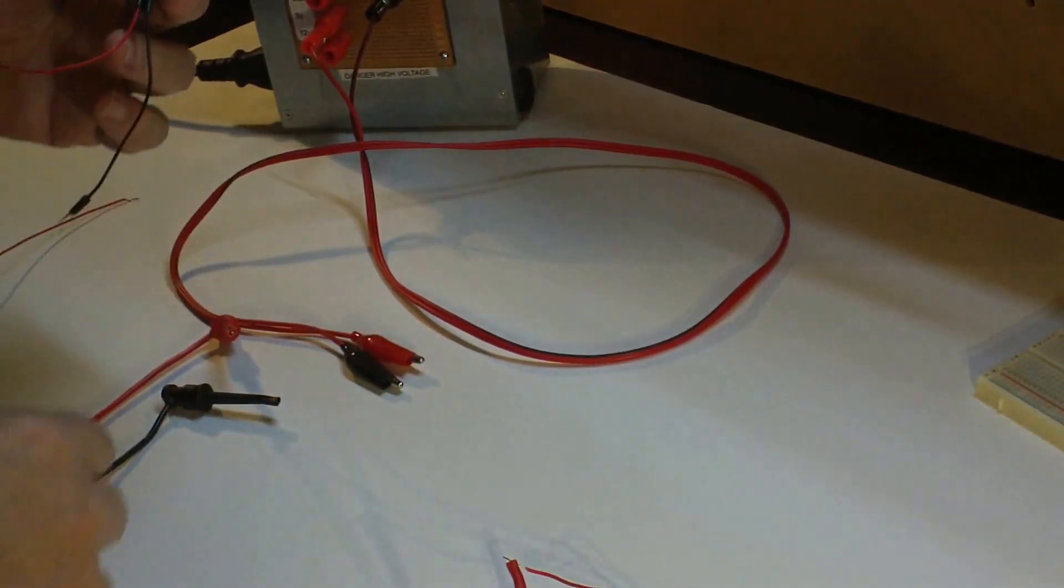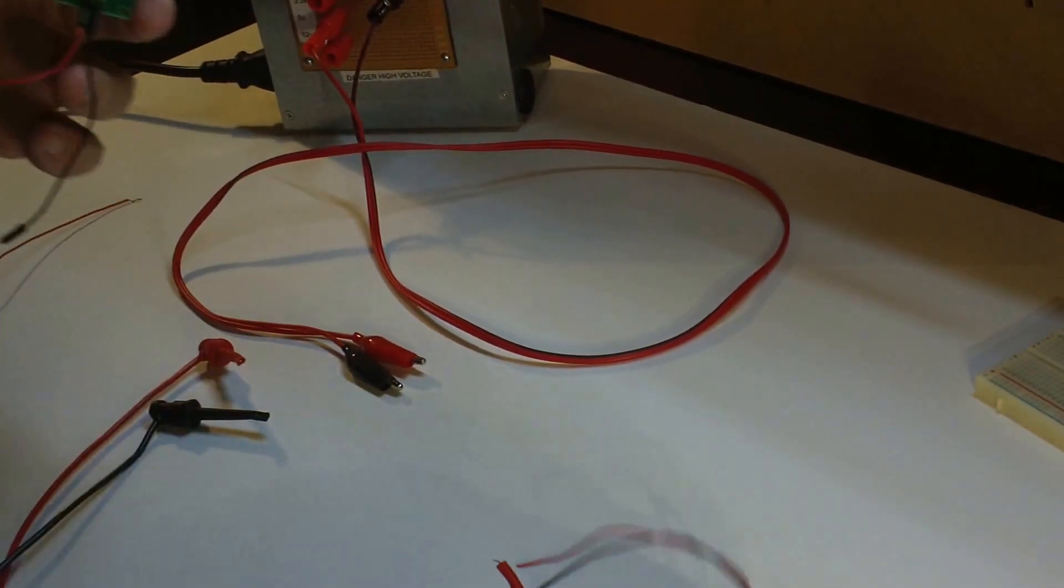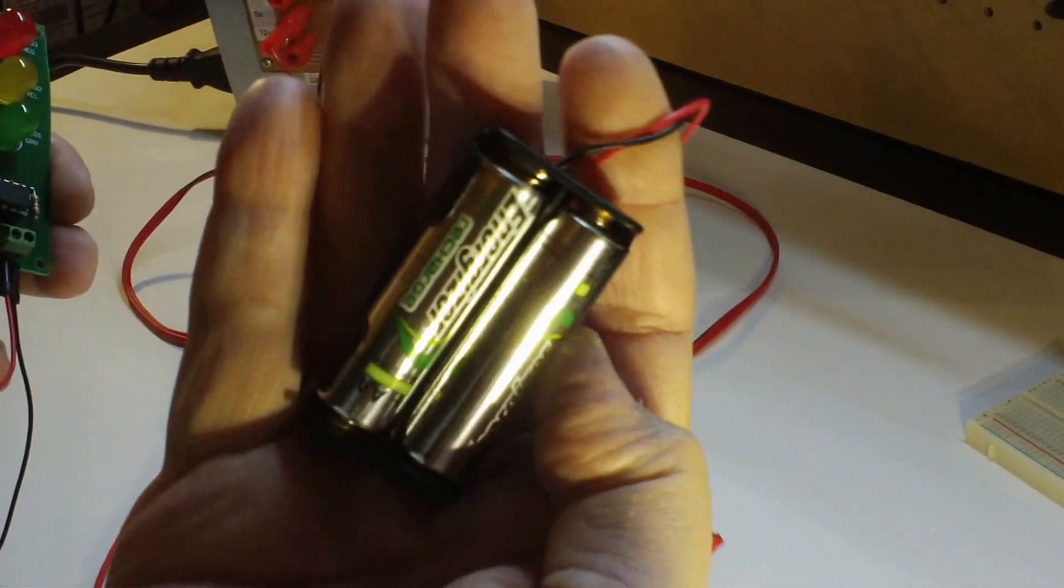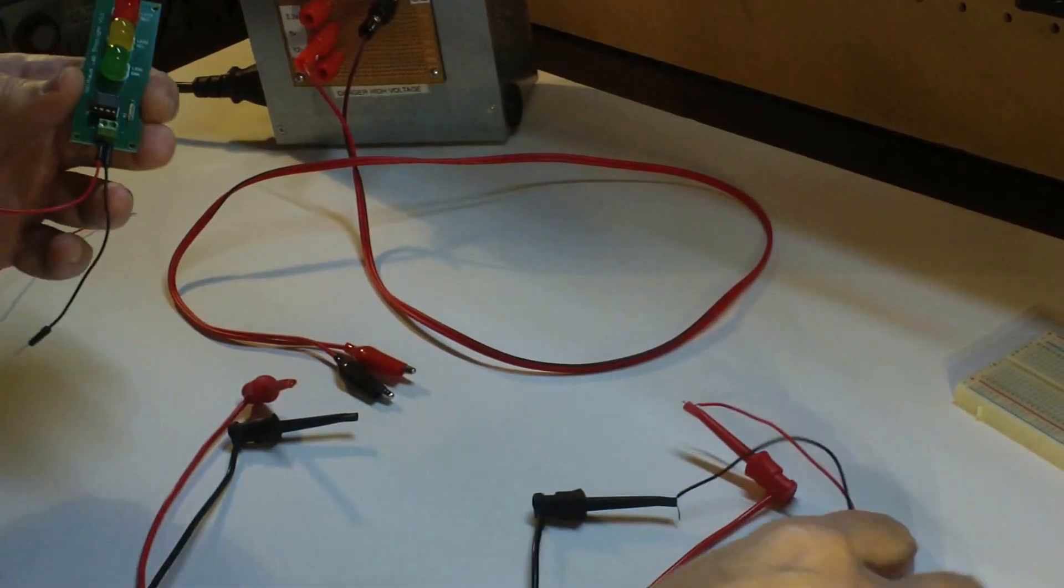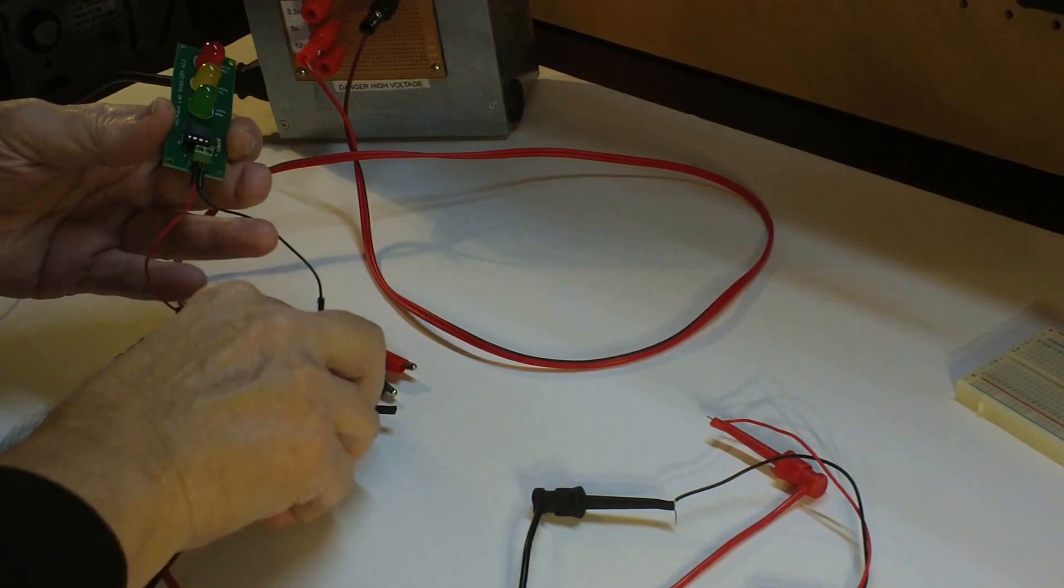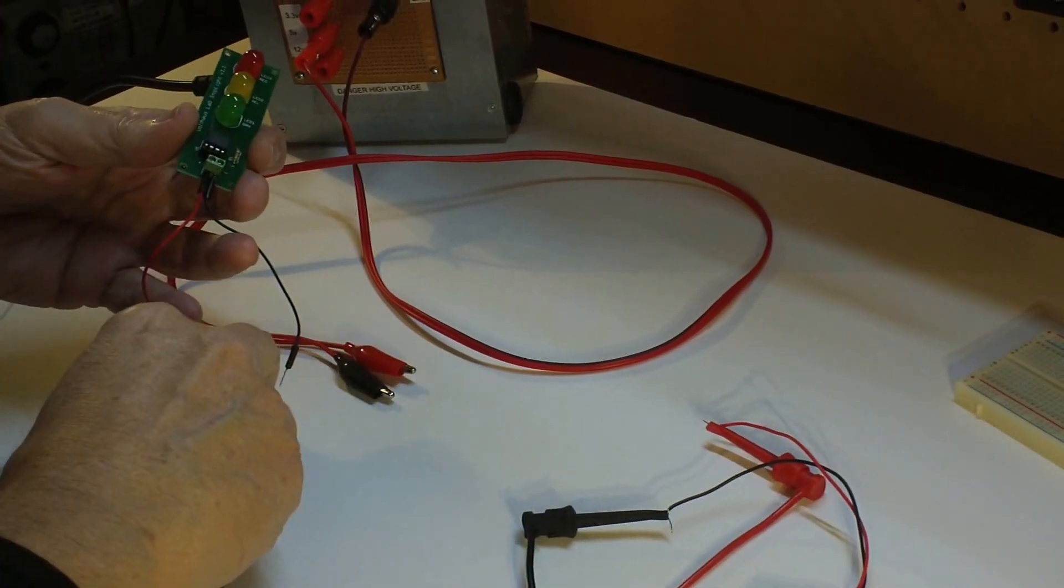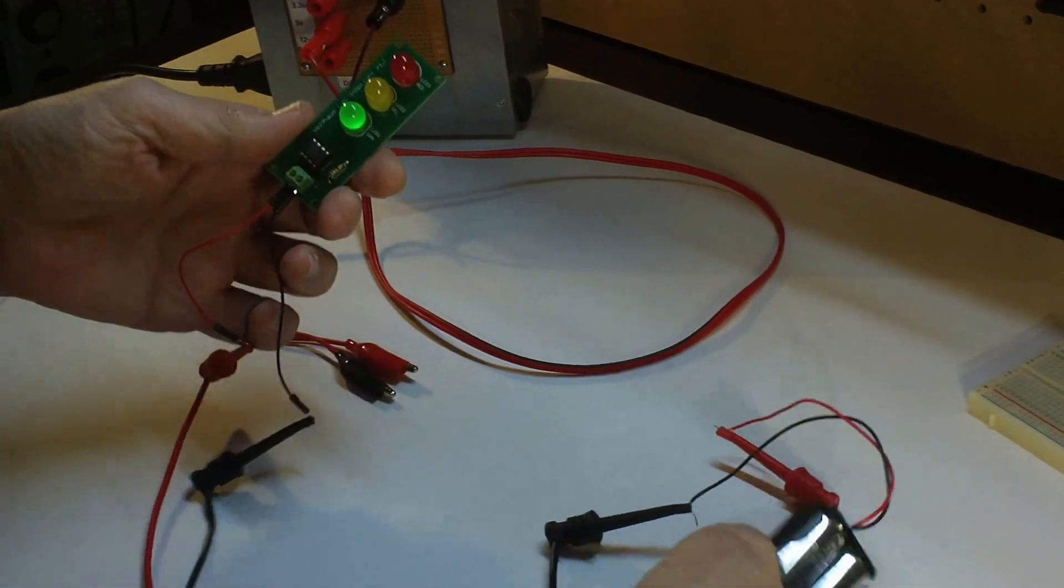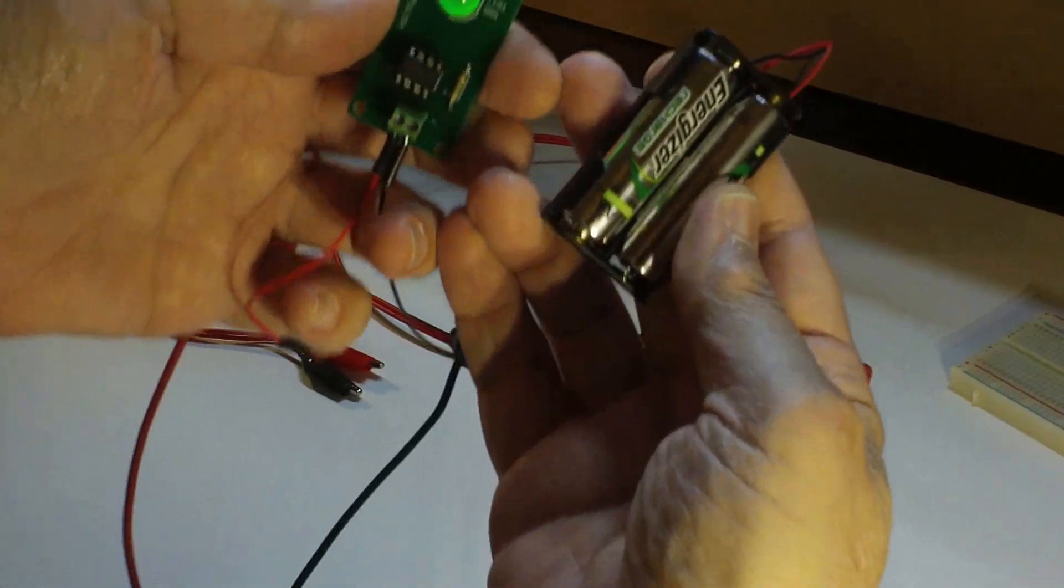Now let's try some power variations here. 2AA rechargeables. We'll get them hooked up. So that's 1.2 volts per cell for a total of 2.4 volts, and we're